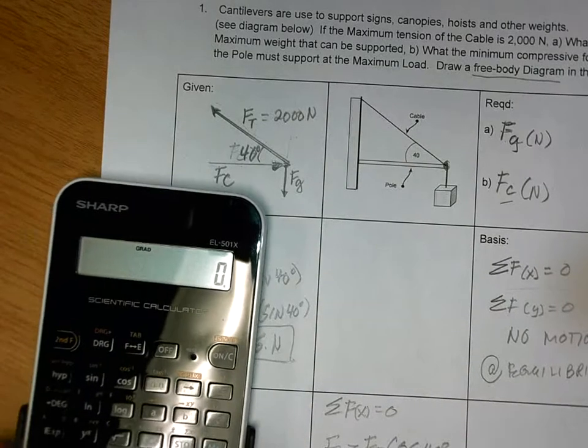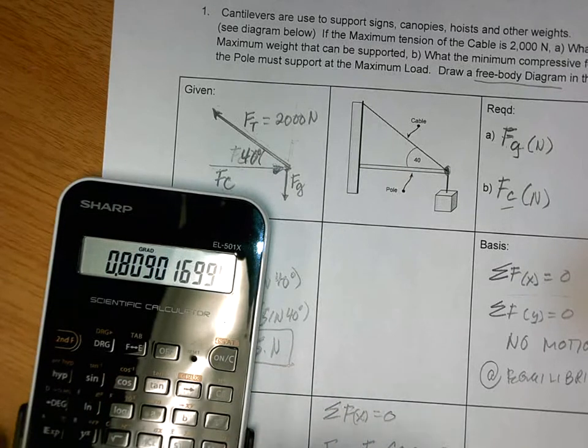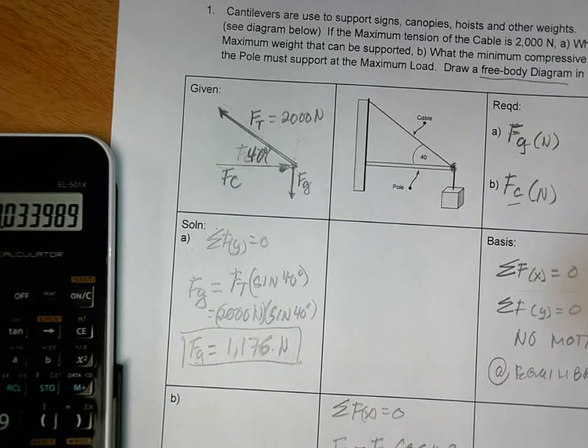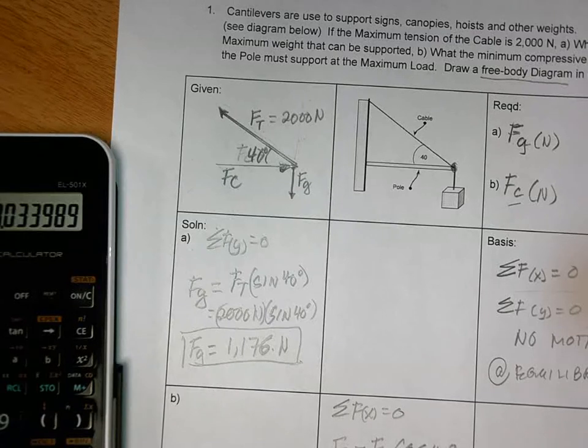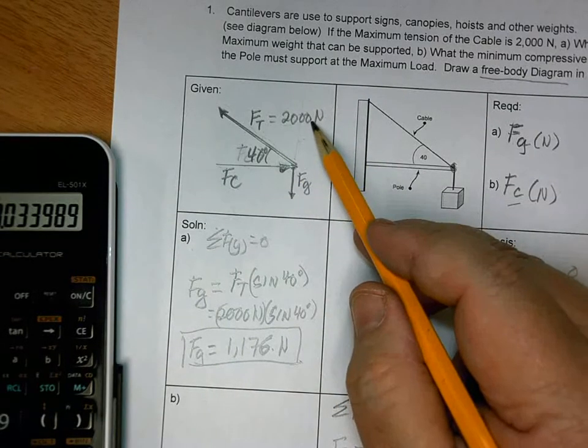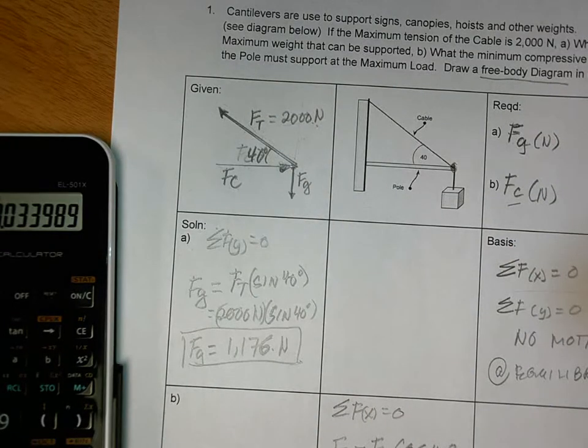And what is that? Again, how do you do that? So, you go 40 cosine times 2,000. And the answer is FC is equal to... Significant figures. Since you're given to the whole newtons, your answer should be to the whole newtons as well, right?